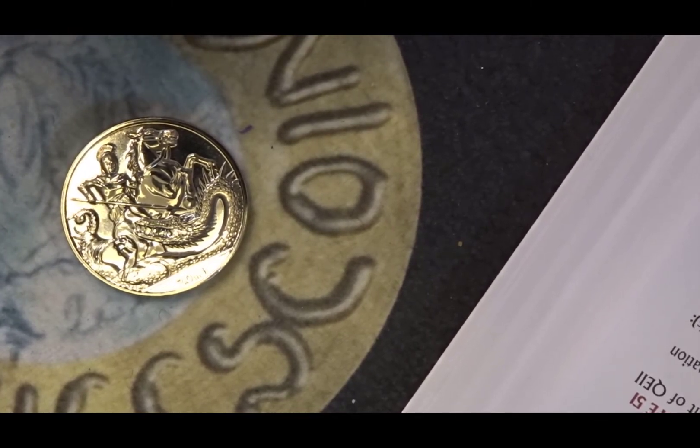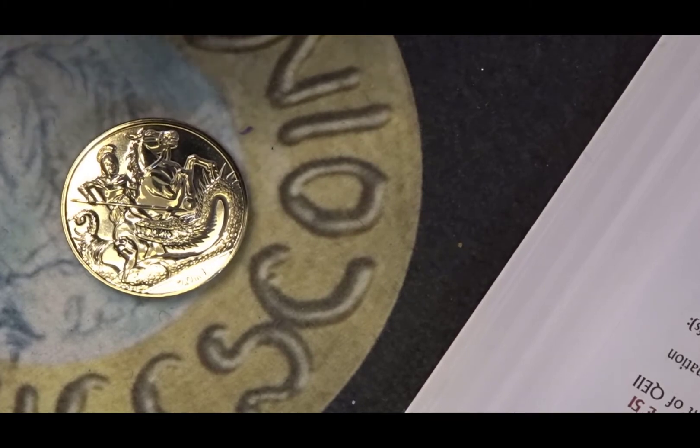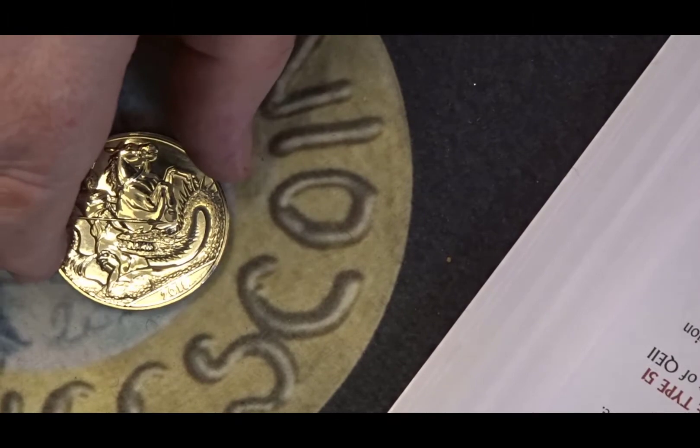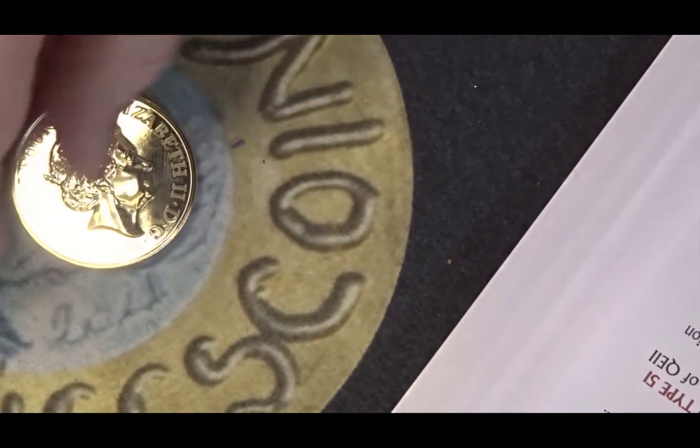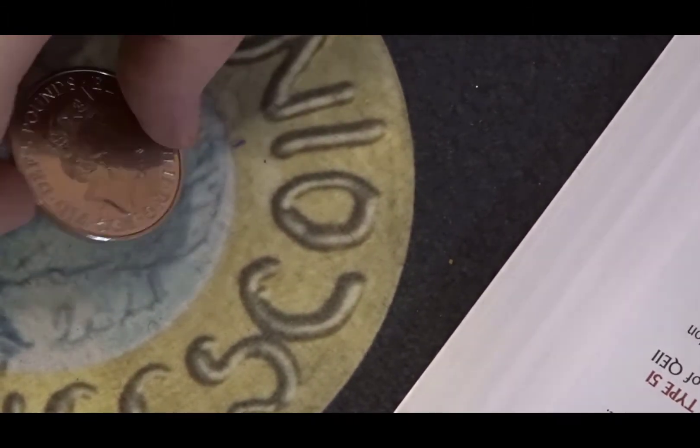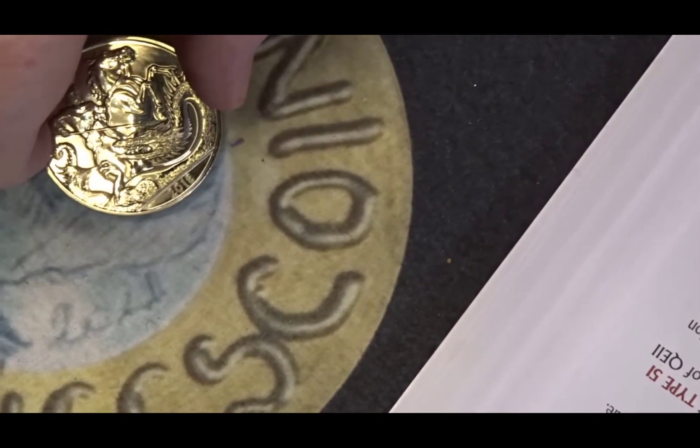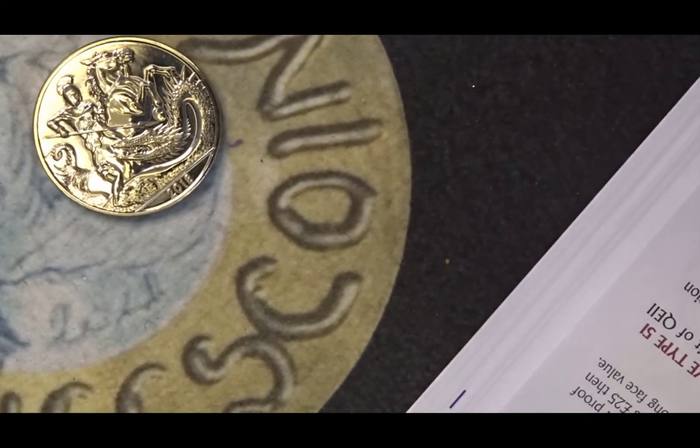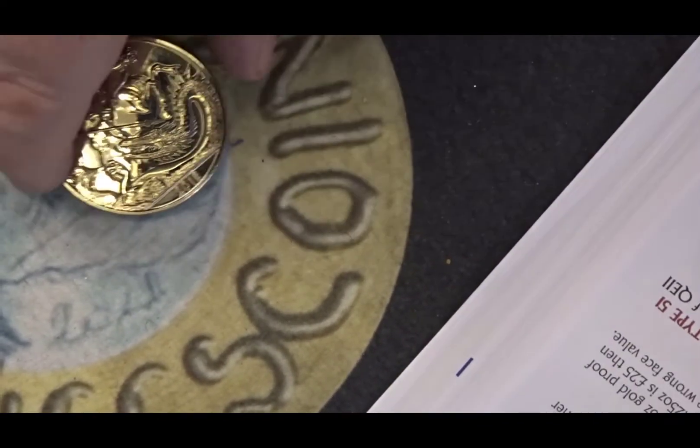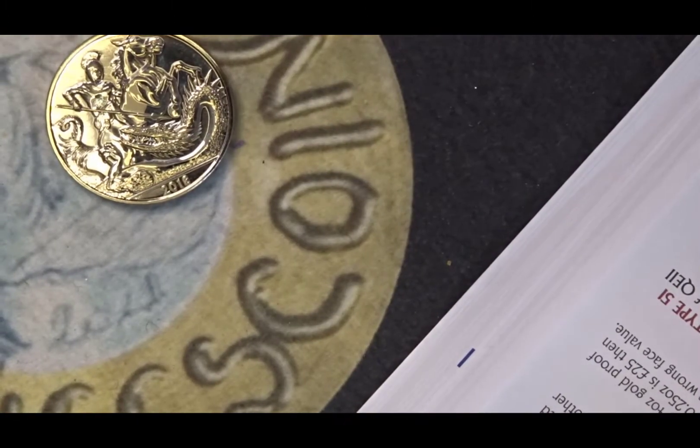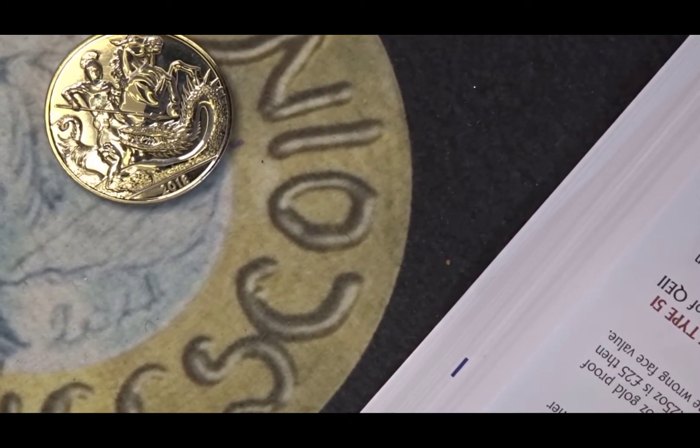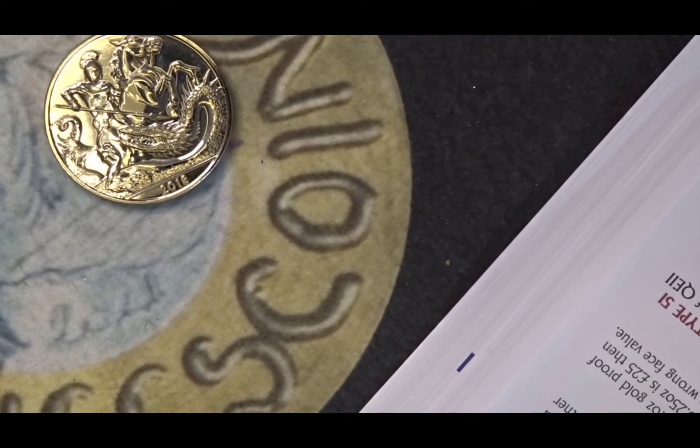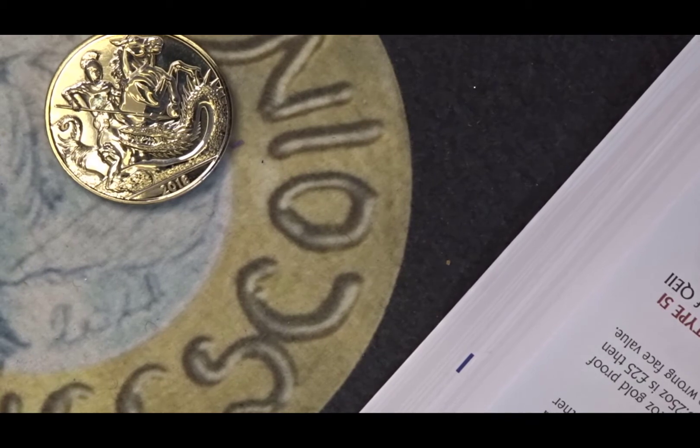This looks very much like a BU. I'm not sure if it was part of the year set for 2018. I think it might just be a five pound proof coin. They have no mintage figures for the actual proof coins in this book.